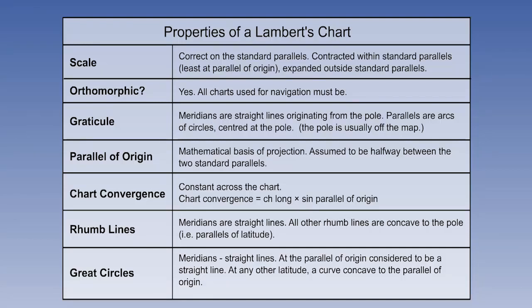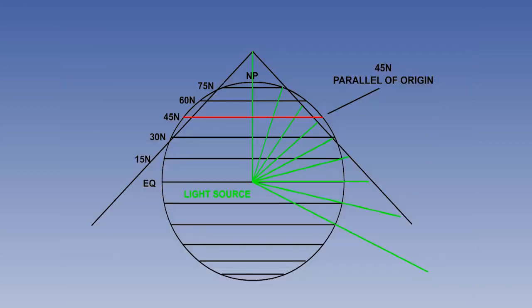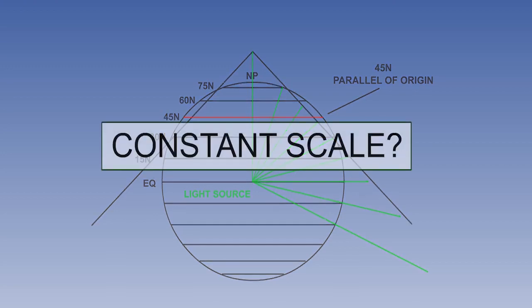Let's start this lesson by reminding ourselves of the properties of the Lambert's conformal conic projection, to give it its full name. We shall look briefly at scale. You will remember that Lambert altered the basic perspective conic projection in order to reduce the scale distortion. So is it a constant scale chart or not?